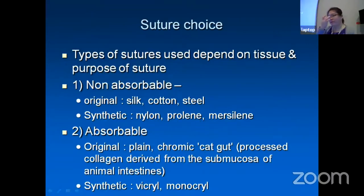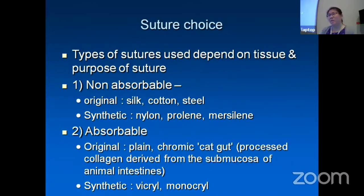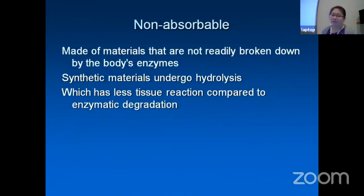Absorbable types include natural plain or chromic catgut. Catgut doesn't come from a cat — the name is derived from 'kit' suture, and it evolved into catgut. It is actually processed from animal intestines from goats or cattle. We also have synthetic absorbable types: Vicryl, Monocryl, and Synosorb. Non-absorbable sutures are made of materials not readily broken down by the body's enzymes; synthetic materials undergo hydrolysis, which causes less tissue interaction compared to enzymatic degradation.